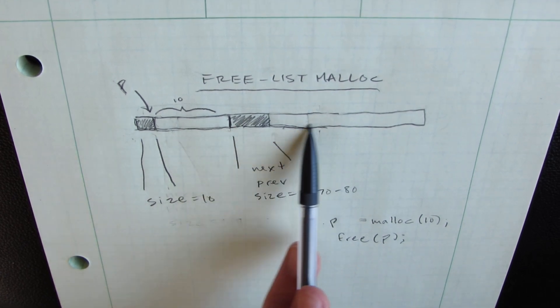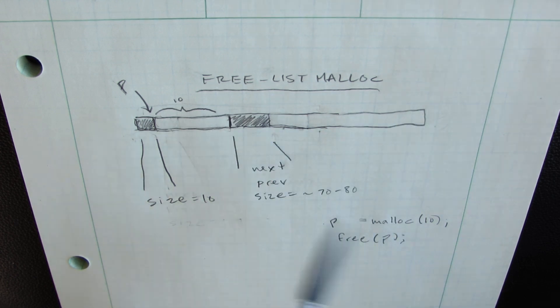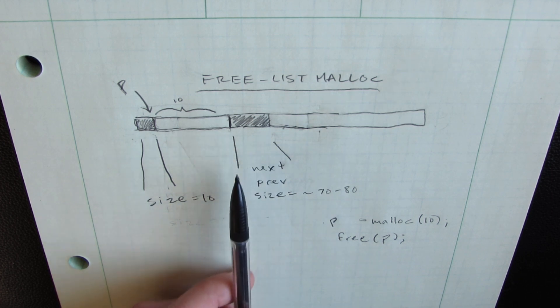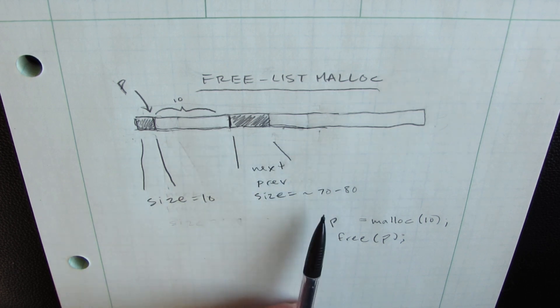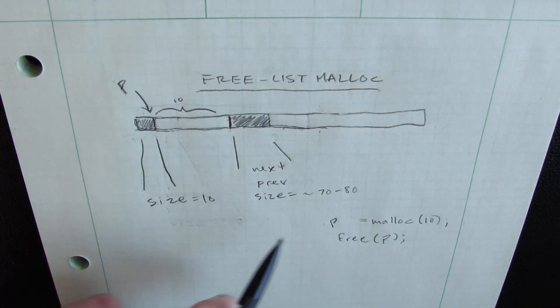And the remaining space of our heap is going to be the new element of our free list. We still just have one, but it's smaller now. So the header is here for that free list. It has a next and a previous pointer. And it also has a size, but this time the size is going to be a little bit smaller. Let's not be exact here, but it'll probably be around 70 to 80 bytes.